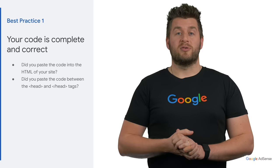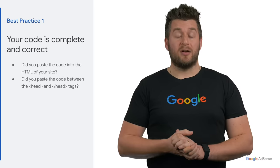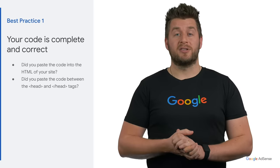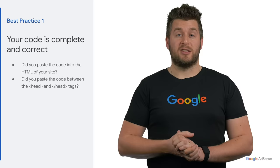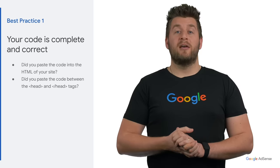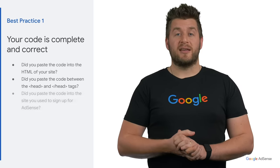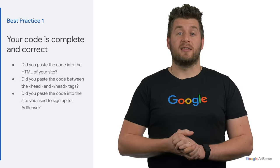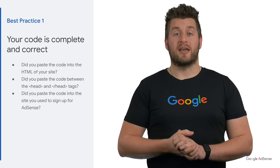The first best practice is to make sure your code is complete and correct. After you've generated the ad code, you will need to place the ad code into the HTML of your site. You need to place the ad code in the head tag or at the top of the body of your page without making any changes.